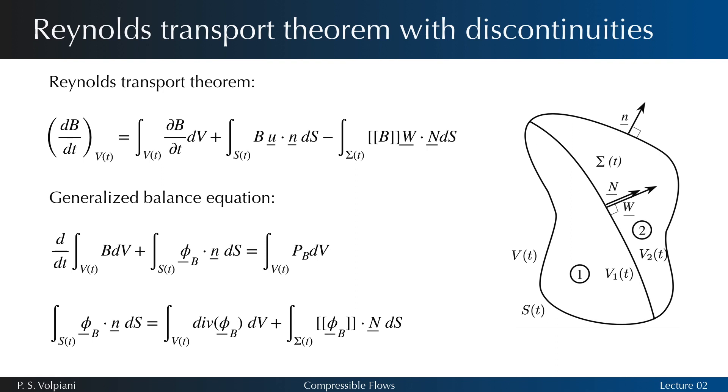Here we extend the Reynolds transport theorem in the presence of discontinuities. Suppose that the domain we follow has a surface of discontinuity that we will call sigma of t, which has its own normal velocity w. The Reynolds transport theorem takes the following form, where brackets b is b2 minus b1 if capital N is the unit vector normal to sigma oriented in the direction 1 to 2 as indicated in the figure.